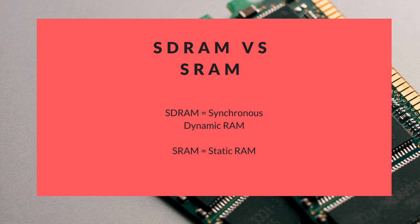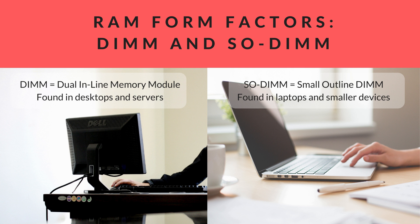Now that you know the basics of RAM, let's discuss its different form factors. RAM comes in two sizes: Dual Inline Memory Modules, or DIMMs, which are found in desktops and servers, and SODIMMs — Small Outline DIMMs — found in laptops and other smaller devices. The two form factors use the same technology and work in exactly the same way, but SODIMM sticks are significantly smaller. When buying RAM, the first thing to figure out is the form factor you need, because RAM is useless if it doesn't fit into your motherboard.